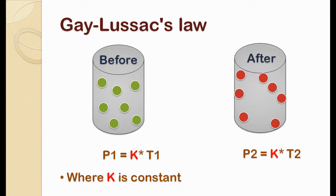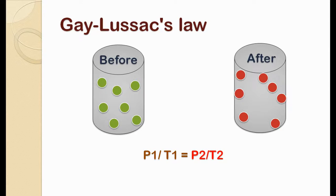As we have studied, pressure is directly proportional to the temperature. Now we will simplify this statement by introducing the constant K. So the equation becomes P1 divided by T1 is equal to K and P2 divided by T2 is equal to K. Now since K is the constant value for both the equations, we will combine both of these equations. And now equation becomes P1 divided by T1 equals to P2 divided by T2.